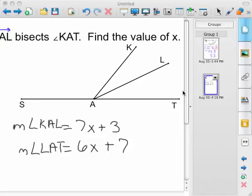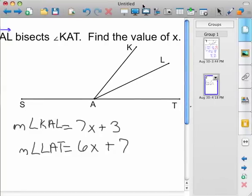All right, in this case, in this figure below, ray AL bisects angle KAT. We're going to find the value of X given the information at the bottom of the screen.